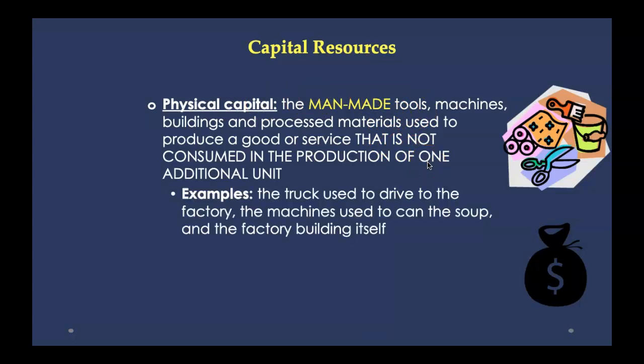A truck would be an example you could put in your study guide as a capital good. The computer — your Chromebook that you're using right now is capital; it's the capital used to produce your education. The lights in the classroom, all the man-made items in the classroom, even the chair you're sitting on is capital used to produce your education. However, the paper you're using — that worksheet — is not a capital resource. It's used to produce your education, but you're using it up right now while writing, so it's an intermediate good.